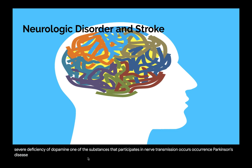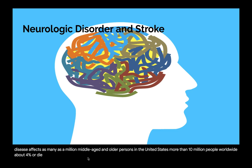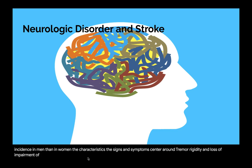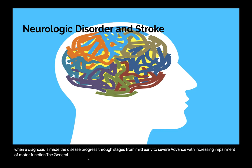Parkinson's disease affects as many as a million middle-aged and older persons in the United States, and more than 10 million people worldwide. Incidence increases with age, and only about 4% are diagnosed before age 50. Approximately 60,000 new cases are diagnosed each year, with one-and-a-half times higher incidence in men than in women. The signs and symptoms center around tremor, rigidity, and loss or impairment of motor function. The disease progresses through stages from mild early to severe advanced with increasing impairment of motor function.